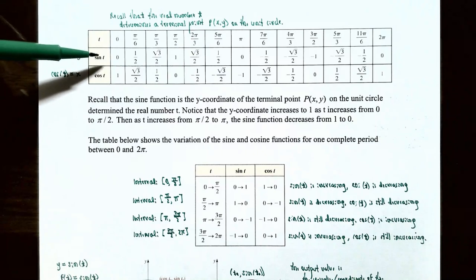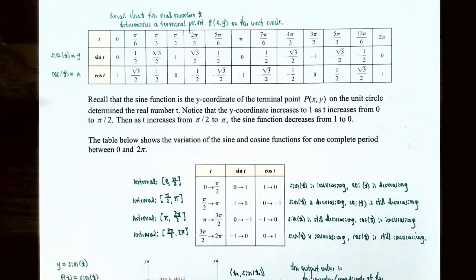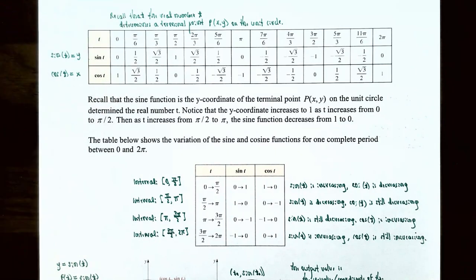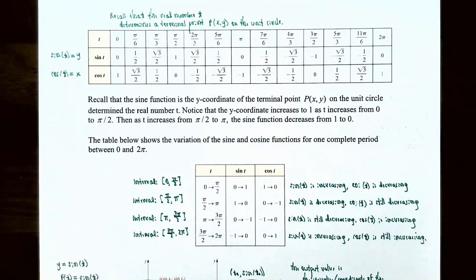The sine function at t = 0 is 0. At t = π/6, sine is 1/2 (the y-coordinate). At t = π/3, sine is √3/2. At t = π/2, sine is 1, since the terminal point is (0, 1). For cosine — the x-coordinate — cosine(0) = 1, cosine(π/6) = √3/2, cosine(π/3) = 1/2, cosine(π/2) = 0. You can repeat this process for quadrants 2, 3, and 4.